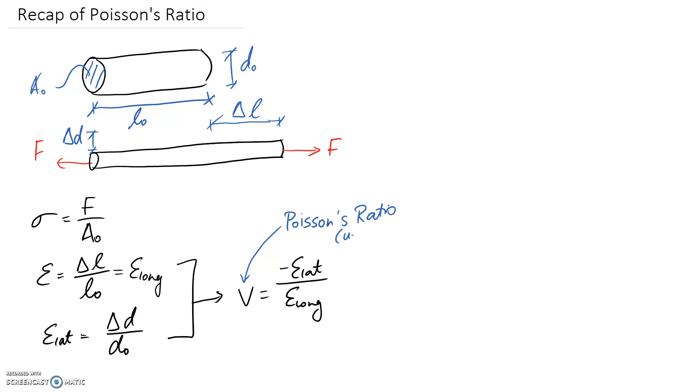One other thing to note is that this is a unitless property simply because, remember, we also said that strain is a unitless property, so something unitless divided by something else unitless is going to give a final answer of Poisson's ratio, which is also unitless.